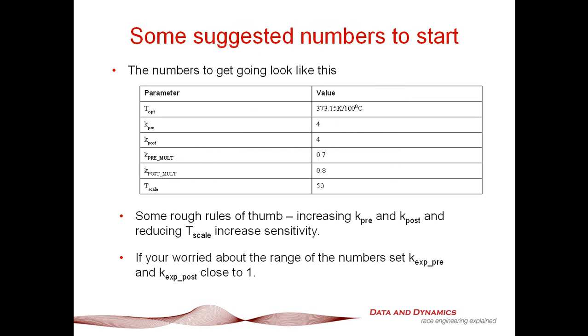Let's kick off with some rough ballpark numbers to start with. For t optimum, this is going to vary from car to car. I've got a value there of about 373.15 Kelvin or about 100 degrees Celsius. Rough rules of thumb, as I've discussed in other tutorials, it's typically about 30 to 40 degrees over what you're going to be getting in terms of your measured tire temperatures as you come into pit lane. Your k pre and k post is about 4 and 6. Your k pre multiplication is about 0.7, k post multiplication is about 0.8. The reason I've put k post multiplication at 0.8 is as a little bit of a safety as you really start to load up the tire. And t scale is about 50 degrees Celsius.